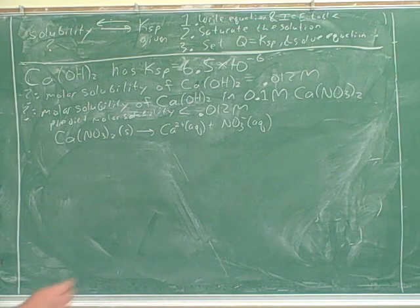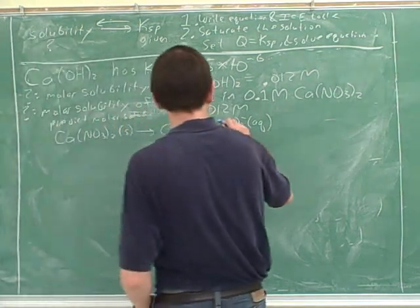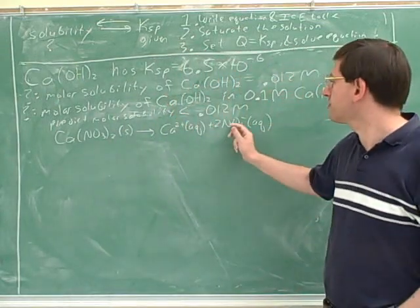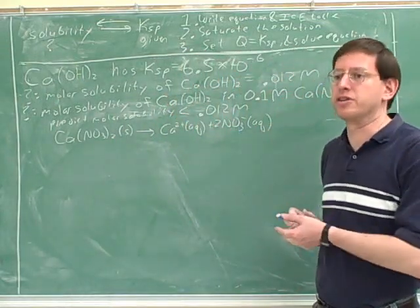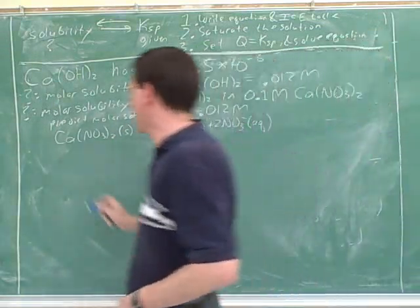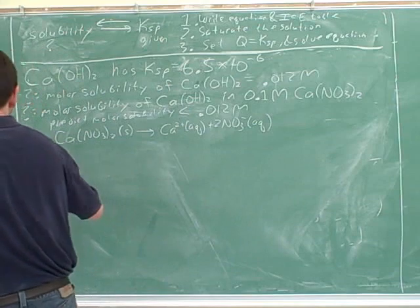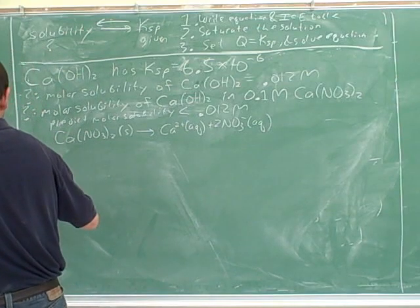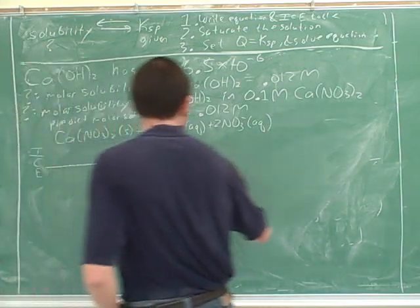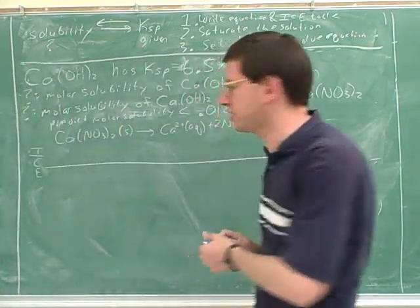Now we need to write a second reaction for them, but we need to finish with the first reaction first. So let's do an ICE table for this reaction. We need to let this reaction finish and then do the second reaction.